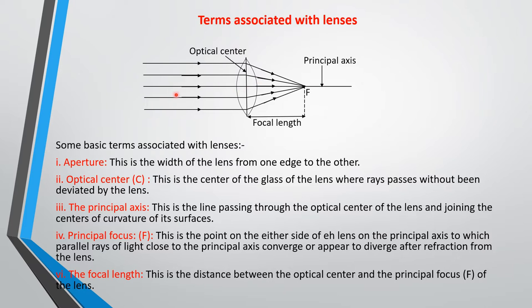A lens has two centers of curvature, one on the right and one on the left. That is the principal axis. The principal focus is the point on either side of the lens on the principal axis to which parallel rays of light close to the principal axis converge, or appear to diverge, after refraction from the lens. A lens has two principal foci.